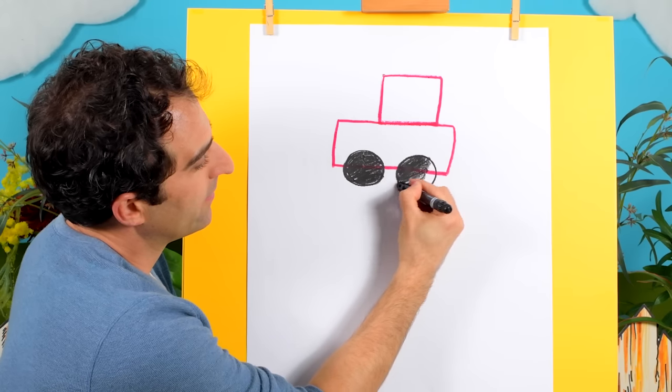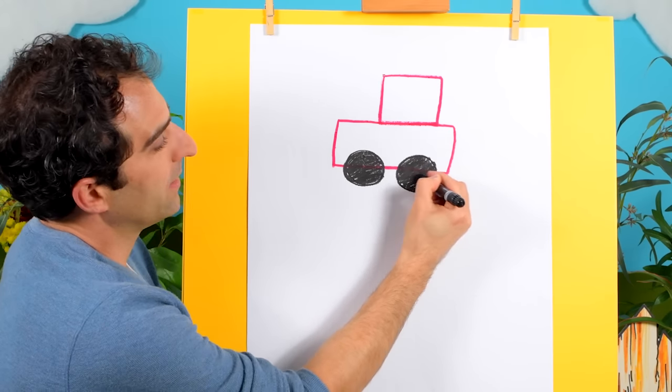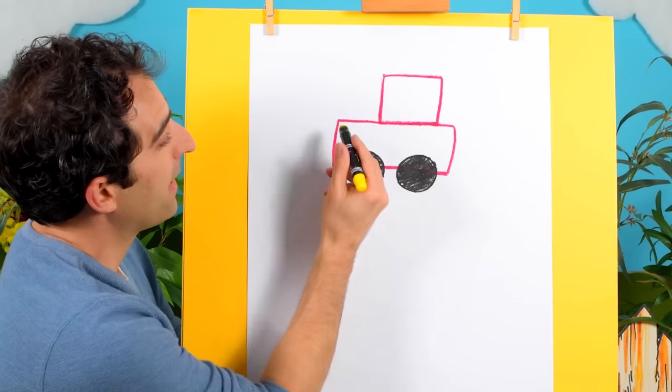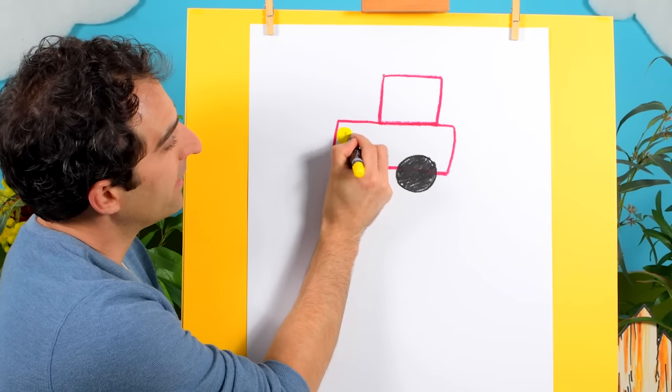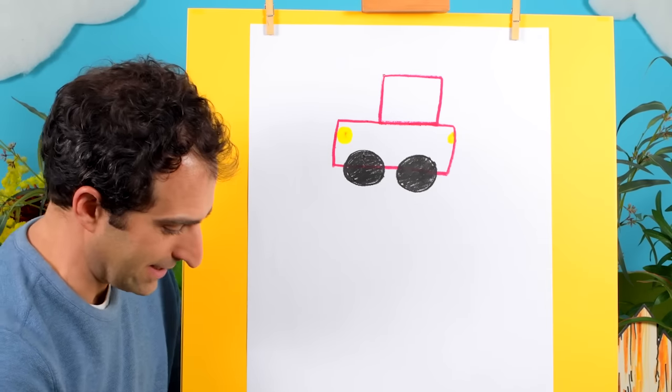And next, we can grab our yellow crayon. Here we go. And put in a light at the front. There we go. And maybe a little one at the back. Great!